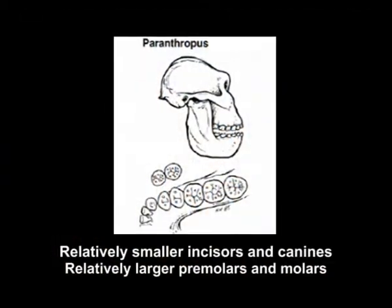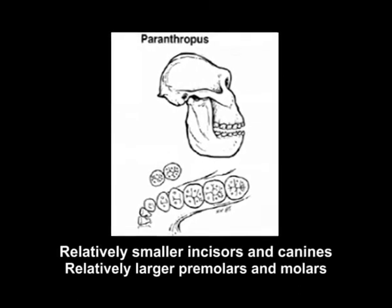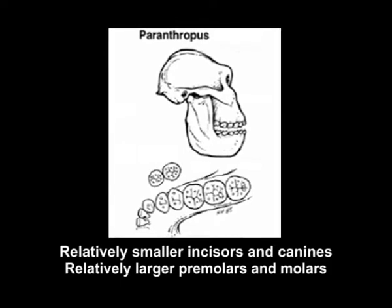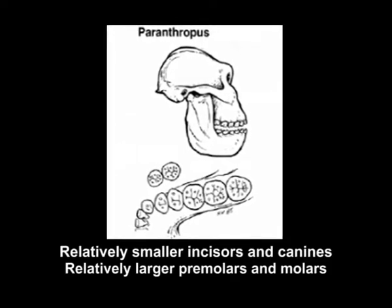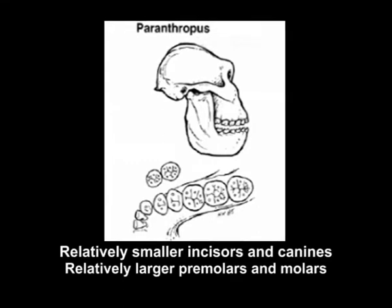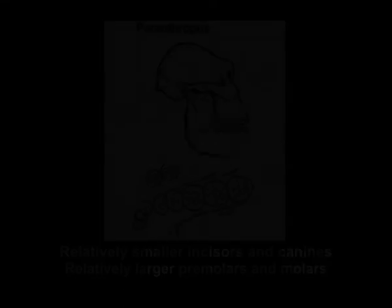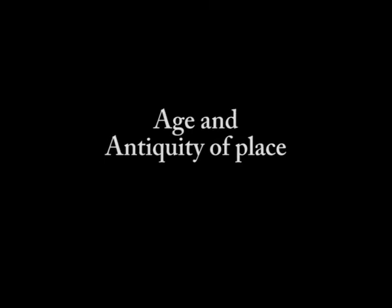The gracile form shows none of these features. Rather, their post-canine teeth are smaller and anterior teeth would be substantial until tool-making had reached a fairly advanced level. Regarding antiquity of places, the Taung cave, once considered to be very ancient, actually seems to be the most recent one — less than 0.9 million years ago. The specimen may represent one of the last surviving members of the genus Australopithecus.